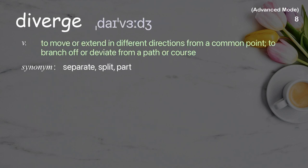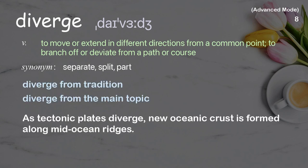Diverge: to move or extend in different directions from a common point; to branch off or deviate from a path or course. Examples: diverge from tradition; diverge from the main topic. Example sentence: As tectonic plates diverge, new oceanic crust is formed along mid-ocean ridges.